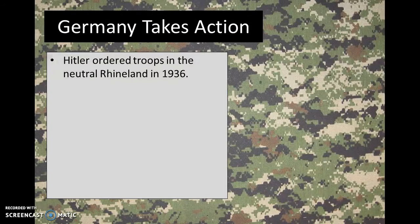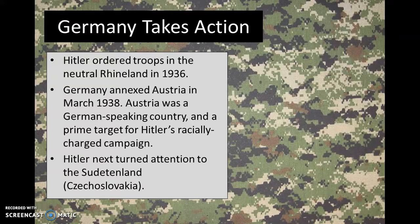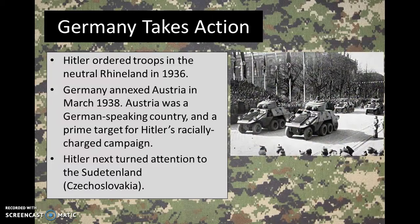As Japan was taking action in Asia, Germany also began to deploy their military. In 1936, Hitler ordered troops into the neutral territory of the Rhineland, and after moving through the Rhineland he annexed Austria in March of 1938. He made Austria a target because his campaign was all about race — Austria was a German-speaking country, which made it a prime target for Hitler's campaign. After he conquered Austria, his next target was an area of Czechoslovakia called the Sudetenland.